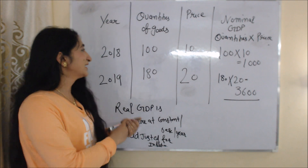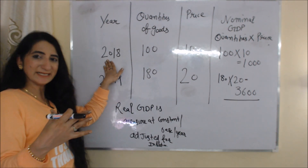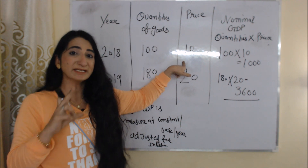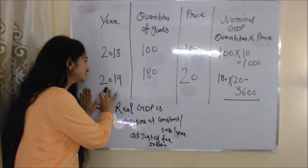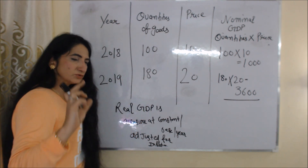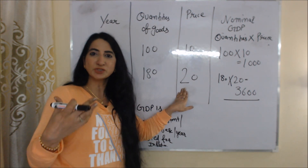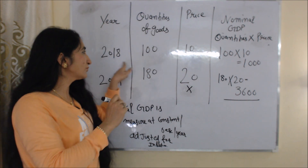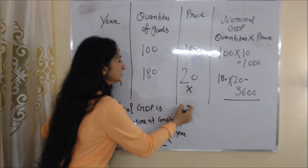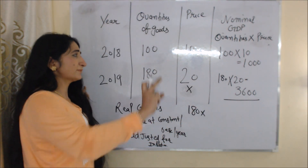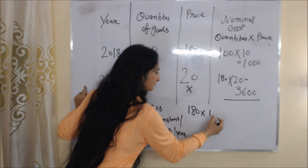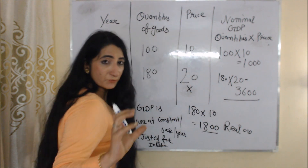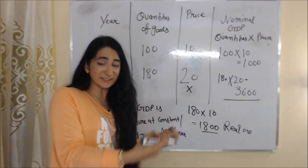We can understand real GDP with the help of an example. Here we assume that for the next five years our base year is 2018, meaning whenever we calculate GDP we will take only 2018 prices. Now we are going to calculate real GDP in 2019. Total production in 2019 is 180, but in real GDP we do not take the current price — we take the base year price, which is 2018. Price in 2018 is 10, so 180 multiplied by 10 equals 1800. This 1800 is our real GDP, showing the true picture of our economy because real GDP does not have an effect of inflation.